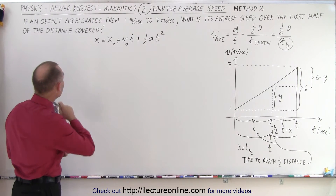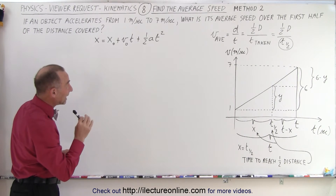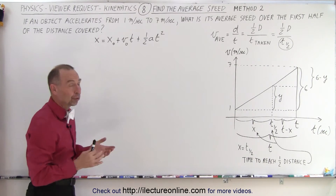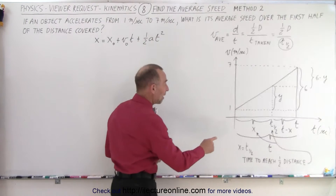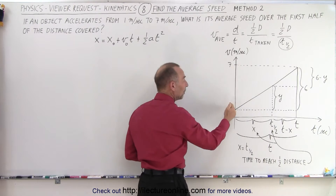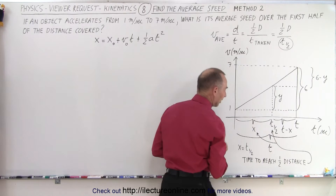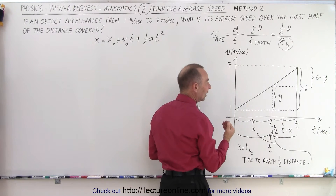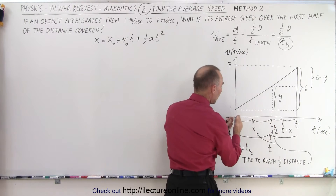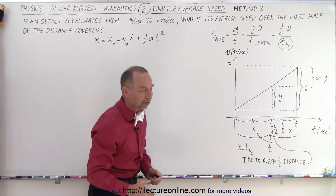The problem was: if an object accelerates from one meter per second to seven meters per second, what is its average speed over the first half of the distance covered? Graphically, we have an object that starts at one meter per second and accelerates to seven meters per second, but we're not told how long that takes. They want to know the average velocity over the distance where the object goes to half of its total distance covered during the entire acceleration.